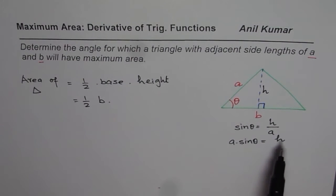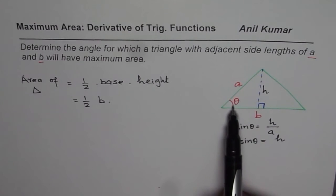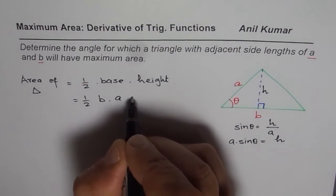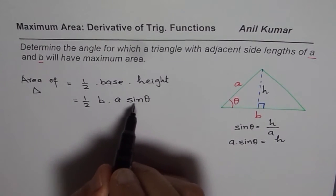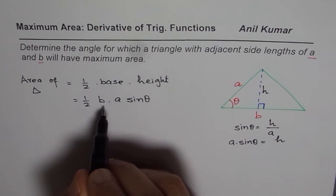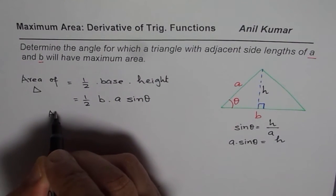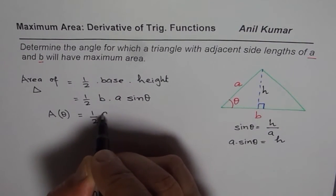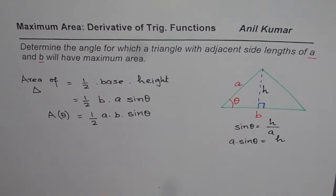That is important to understand. If you want to find the opposite side, it is A times the sine of that angle. So height equals A sine theta. Now we know that the area of a triangle in terms of theta is half of AB times sine theta. So let me write this as area as a function of theta: A(θ) = (1/2) · A · B · sin θ, where A and B are constants — these are the given sides.